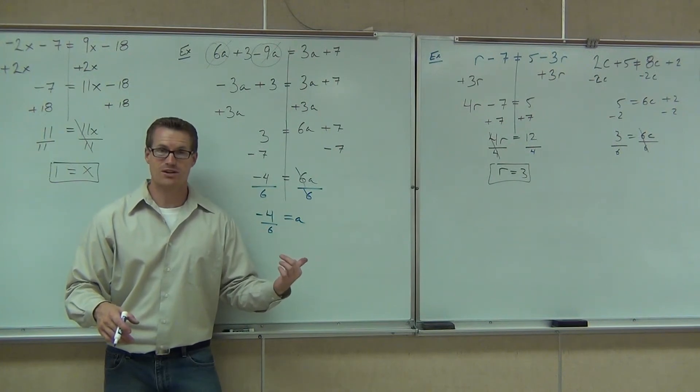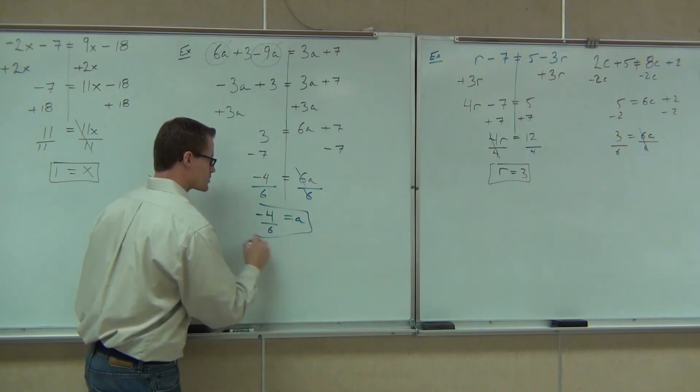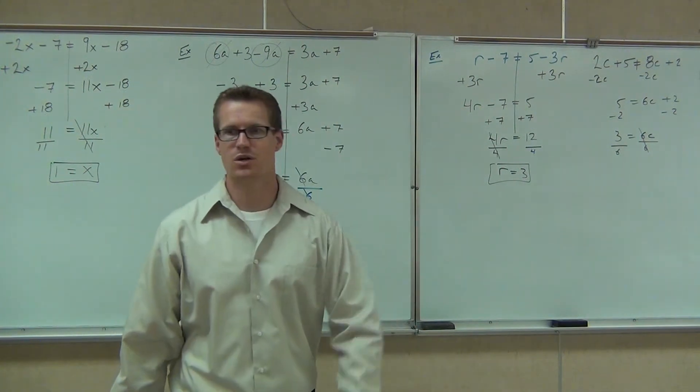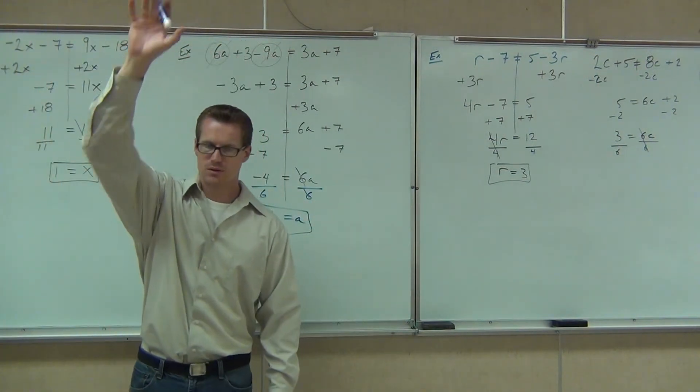I haven't taught you how to reduce yet, so you don't have to reduce it. If you do know how to reduce it, great, reduce that. That's negative 2 over 3. But if you don't know how to reduce it, leave it. Leave it as a fraction. Are fractions okay to get? Say yes. Are fractions okay to get? Yes. So if we get 1, no problem. Our answer is negative 4 over 6. Eventually we'll be able to reduce those, but for right now, we'll leave it negative 4 over 6. Raise your hand if you feel okay with that one. Good.